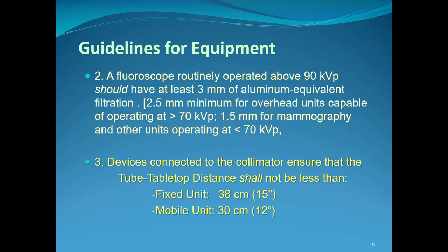Fluoroscopy units routinely operating above 90 kVp should have at least three millimeters of aluminum equivalent filtration. X-ray tubes operating above 70 kVp must have a minimum of two and a half millimeters of aluminum or aluminum equivalent filtration. Mammography receives less filtration because it operates at low kVp levels, making use of the narrower energy spectrum for high contrast. For most diagnostic equipment except high-energy fluoroscopy, the standard is two and a half millimeters of filtration operating above 70 kVp.